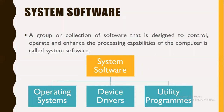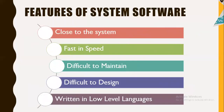There are basically three types of system software: operating system, device drivers, and utility programs. Today we will revise the operating system and also discuss device drivers and utility programs. These are the features we have already discussed — let's revise them again. System software is close to the system, fast in speed, difficult to maintain, difficult to design, and written in lower level languages.